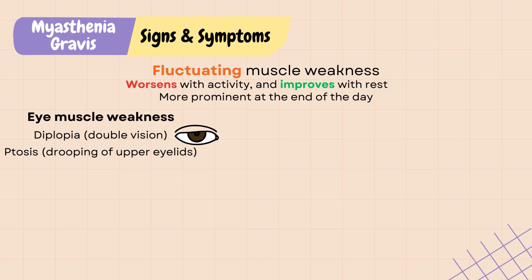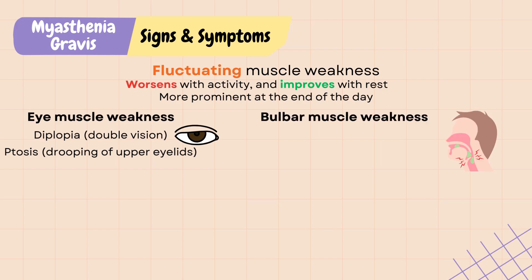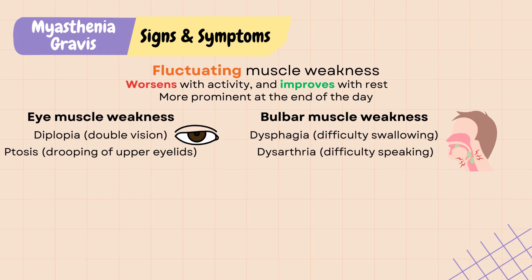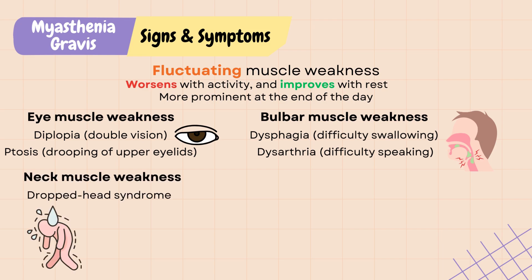MG can also affect the muscles that control swallowing, chewing, and speaking, causing symptoms like dysphagia, or difficulty swallowing, and dysarthria, or difficulty speaking. It can involve the neck muscles and cause dropped head syndrome. MG can cause limb weakness, with upper limbs more affected than lower limbs. There are no autonomic symptoms, as MG only involves the acetylcholine receptors.